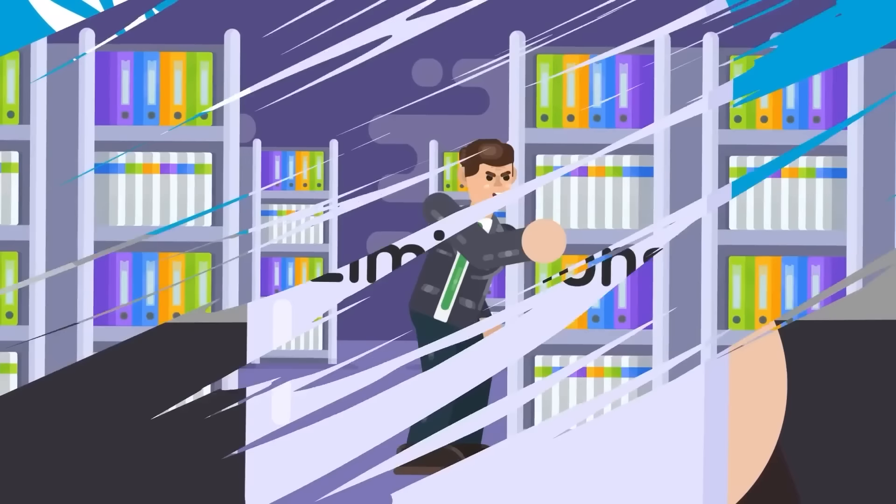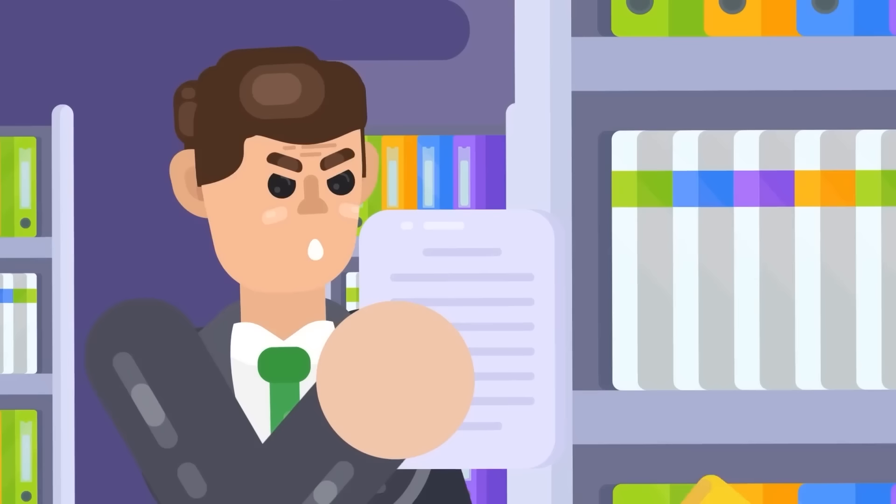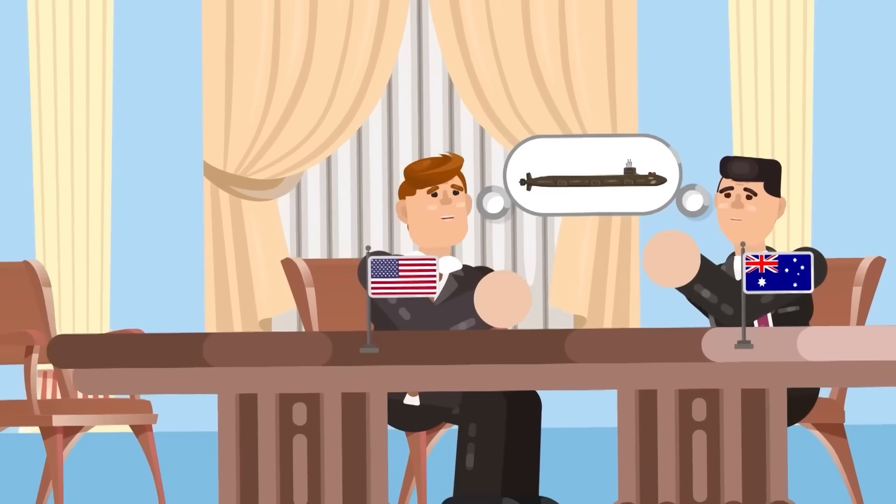But not everyone follows the rules, and much to the chagrin of China and many other countries around the world, AUKUS has found a way around the rules. Before we get into how the AUKUS countries exploited a loophole to allow Australia to acquire nuclear-powered submarines, let's see where the agreement stands.